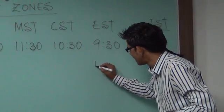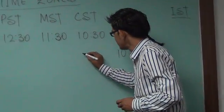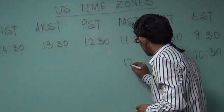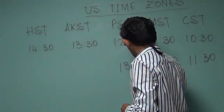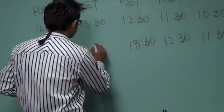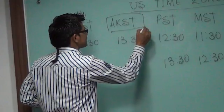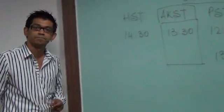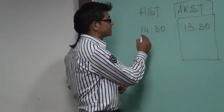During Daylight Saving Time the differences become: ten and a half hours for EST, eleven and a half for CST, twelve and a half for MST, and thirteen and a half for PST. Note that Alaskan Standard Time does not observe Daylight Saving Time, so it stays the same.